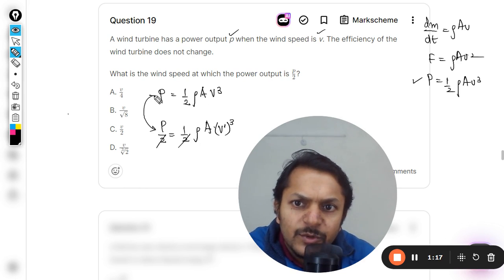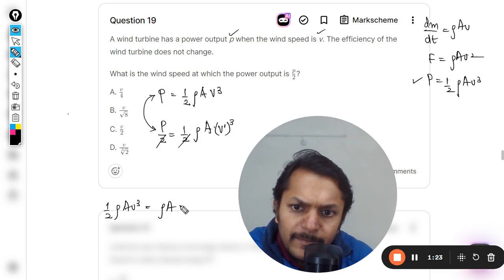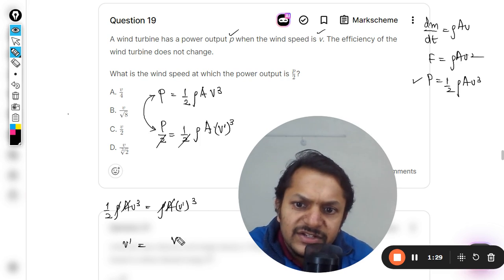ρA and ρA is cancelled, clearly v dash is coming out to be v over cube root of 2.